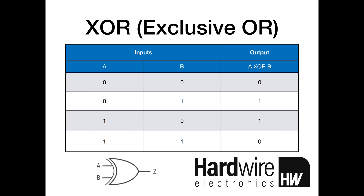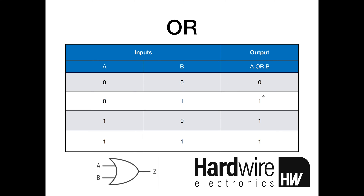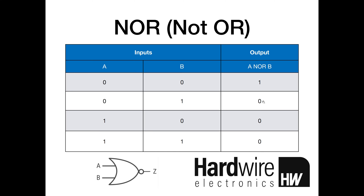The next operation to look at is NOR — a NOR is the exact opposite of an OR, and it stands for not OR. In the three cases where an OR gate is on, a NOR gate is off — it's the exact opposite. It's looking for the case when A and B are both false. When A is off and B is off, A NOR B will be on. In all other cases, when A or B are high, it will be off.